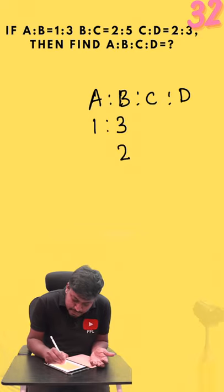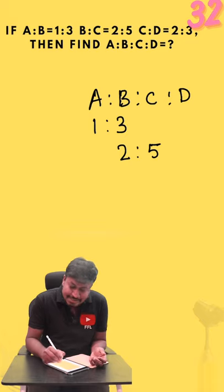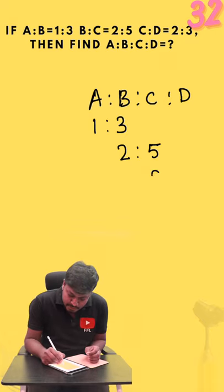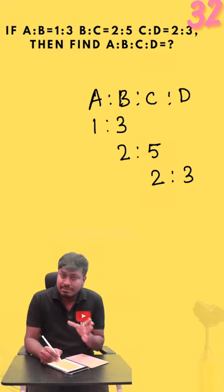B:C will be 2:5, so write 2:5 here. C:D will be 2:3. According to the question, we have written all the values.